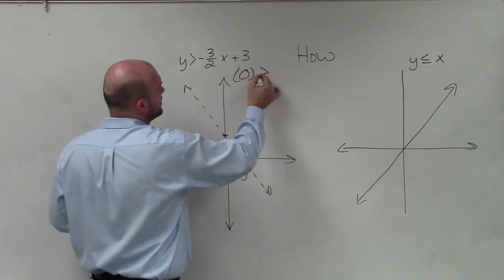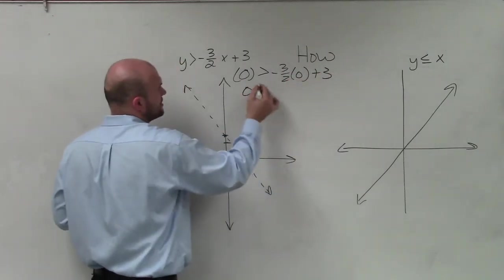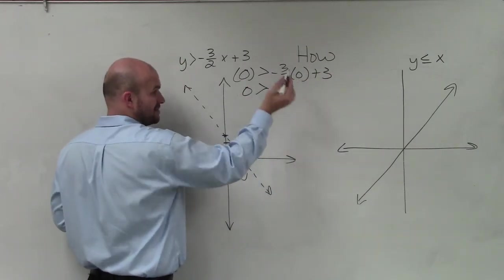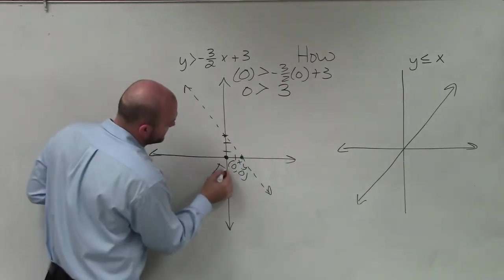So I plug in: 0 is greater than -3/2 times 0 plus 3. 0 is greater than -3/2 times 0, which is obviously 0, plus 3 is just going to be 3. 0 greater than 3 - that is false.